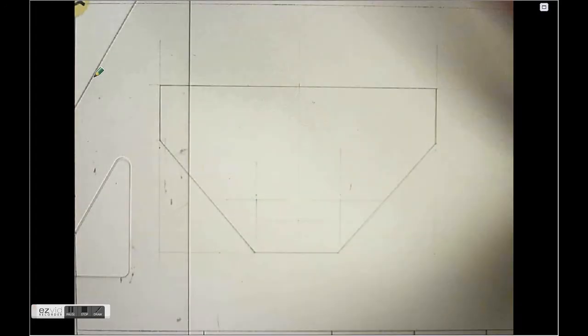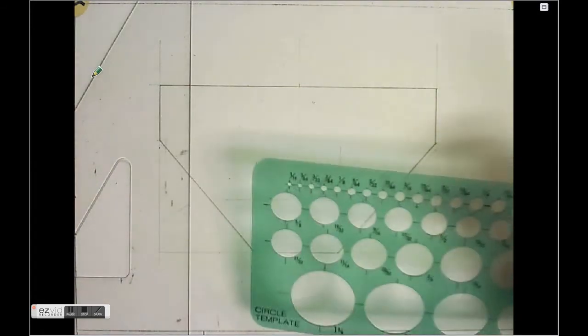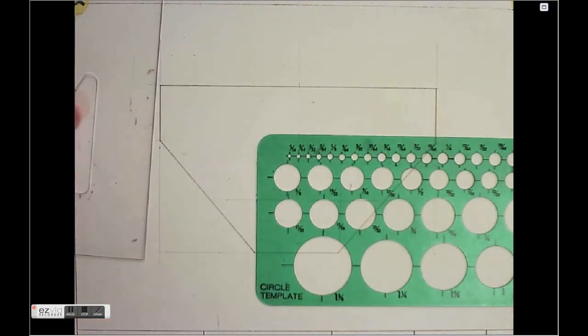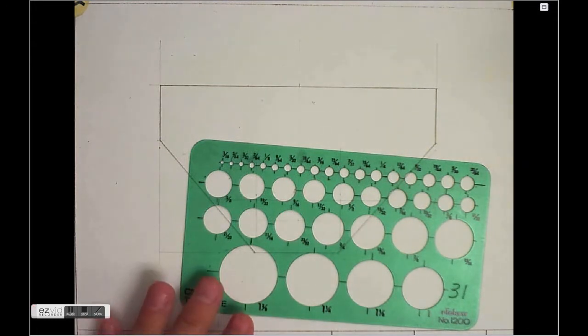That's what you're going to use. You could use a compass, but these are kind of smaller holes. So for this, we use a circle template. And this happens to be a smaller one. They come in all different sizes. They come in metric too, so you have to be careful to make sure you pick up the right circle template.